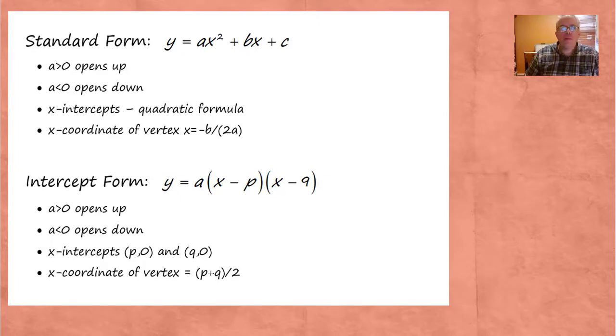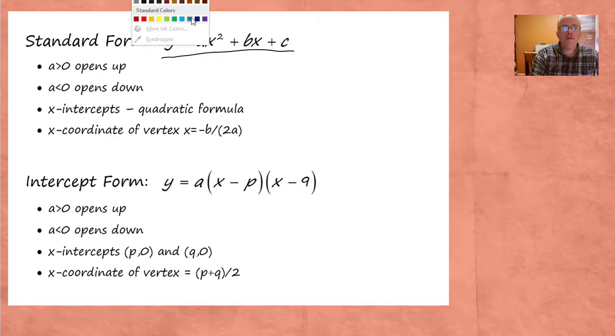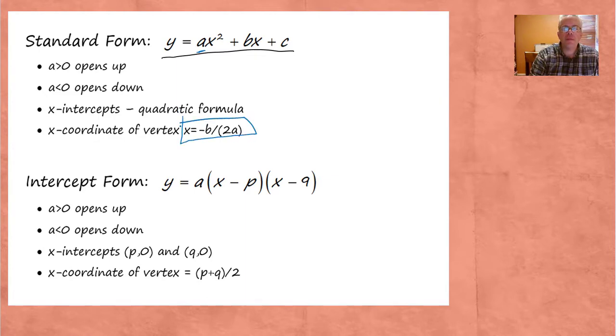I just want to remind you that we talked about standard form for parabolas already. Standard form is when the equation is all multiplied out and has the form y equals ax squared plus bx plus c. In this we learned how to tell if the parabola is going to open up or down by looking at the sign of a. So if a is positive it opens up, if a is negative it opens down. We learned how to find the x-intercepts by using the quadratic formula, and we had this very useful formula for finding the vertex of the parabola.